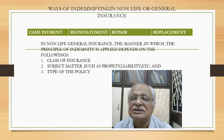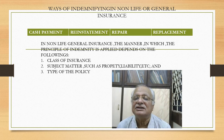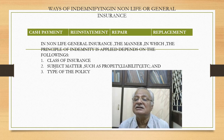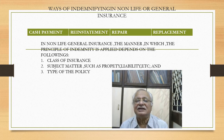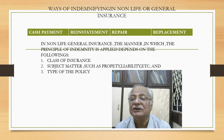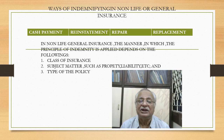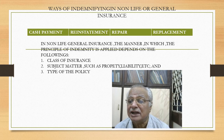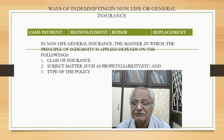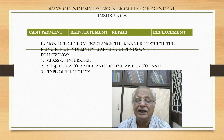The methods of indemnification include cash payment, reinstatement, repair, or replacement. In practice, insurance companies go for cash payment 99-100% of the time. Technically, they can reinstate the goods, repair the damaged item, or replace it as per specification. In non-life general insurance, the manner in which the principle of indemnity is applied depends on the class of insurance, the subject matter — such as property or liability — and the type of policy.